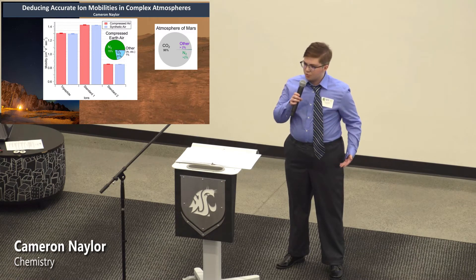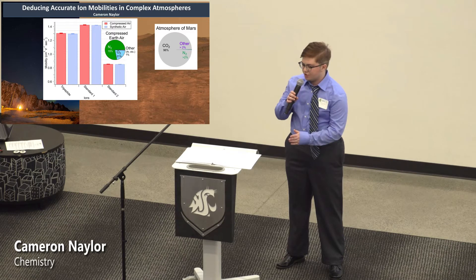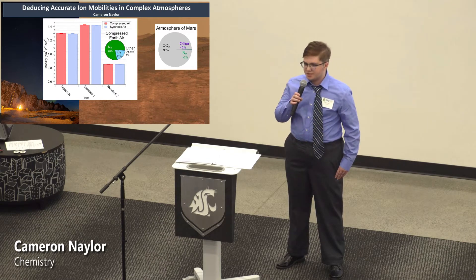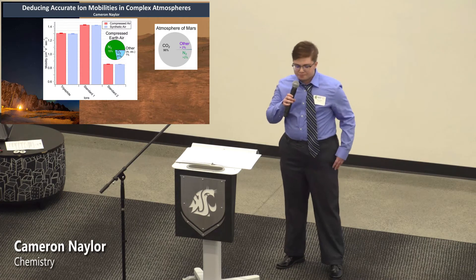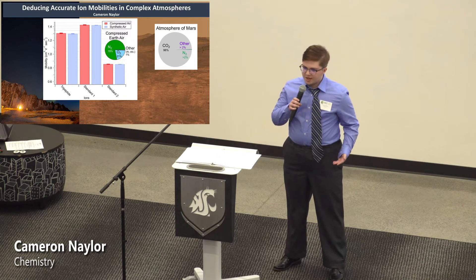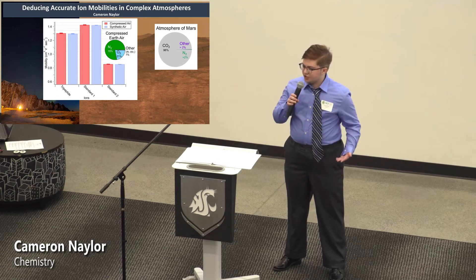Arguably the most widely used analytical technique on Earth, ion mobility spectrometry, measures the time that ionized chemicals travel through a tube filled with filtered air. Its success is largely due to its ease of use and robustness. But in order for this technology to be used in extraterrestrial environments, we need a theory that predicts ion flight times, or mobilities, in different gas mixtures, not just nitrogen and oxygen.